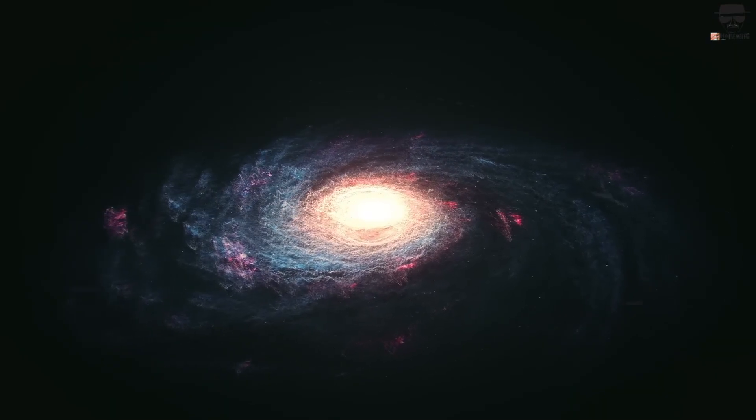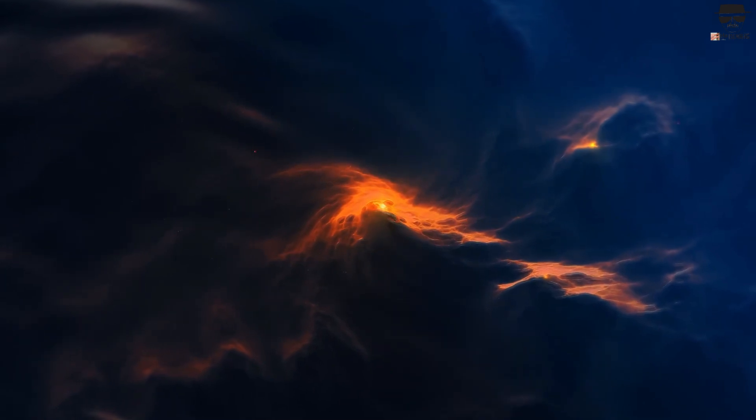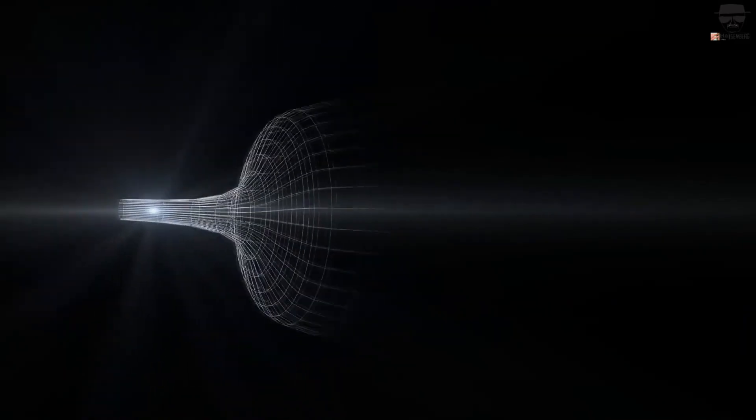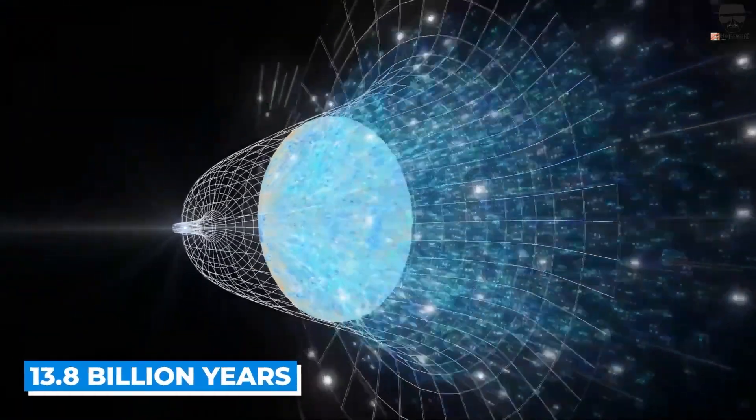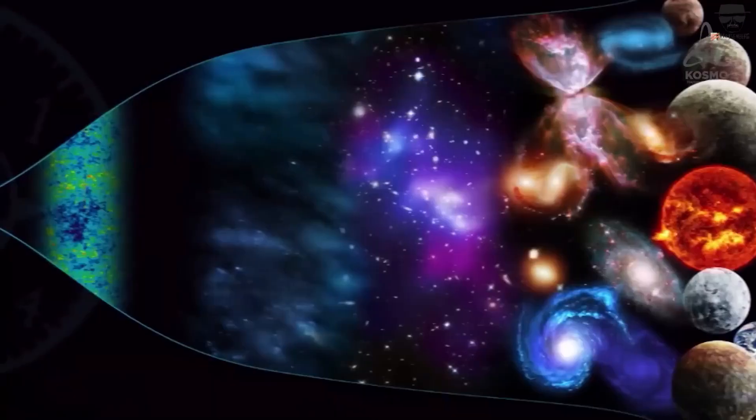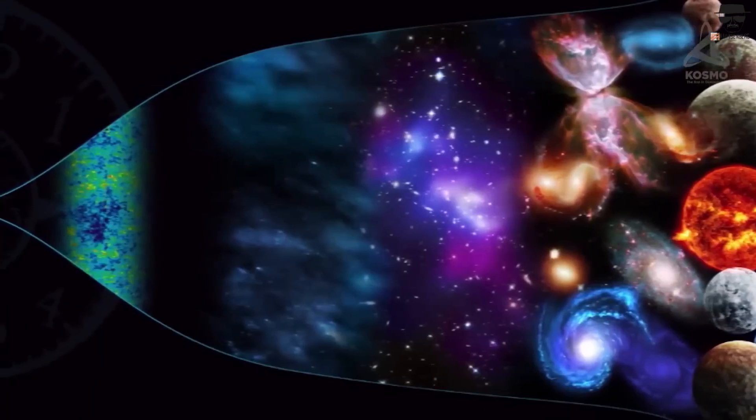According to what the Big Bang Theory tells us, our whole universe was nothing more than a tiny ball, otherwise known as the point of singularity, around 13.8 billion years ago. So how did it become this huge structure we live in today?